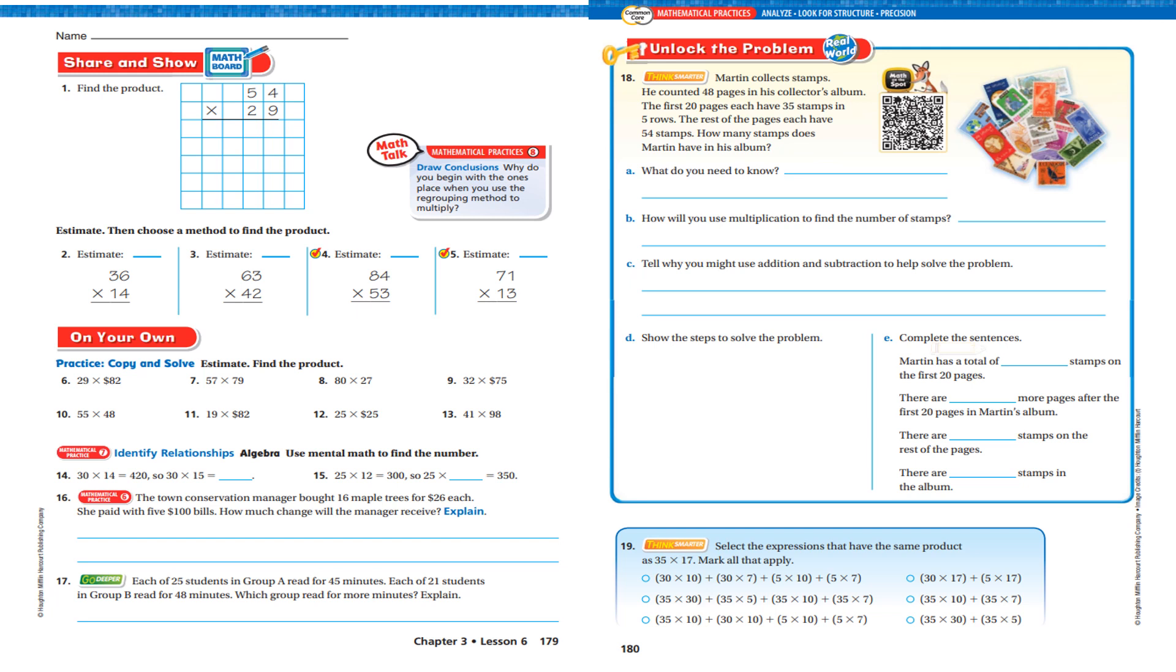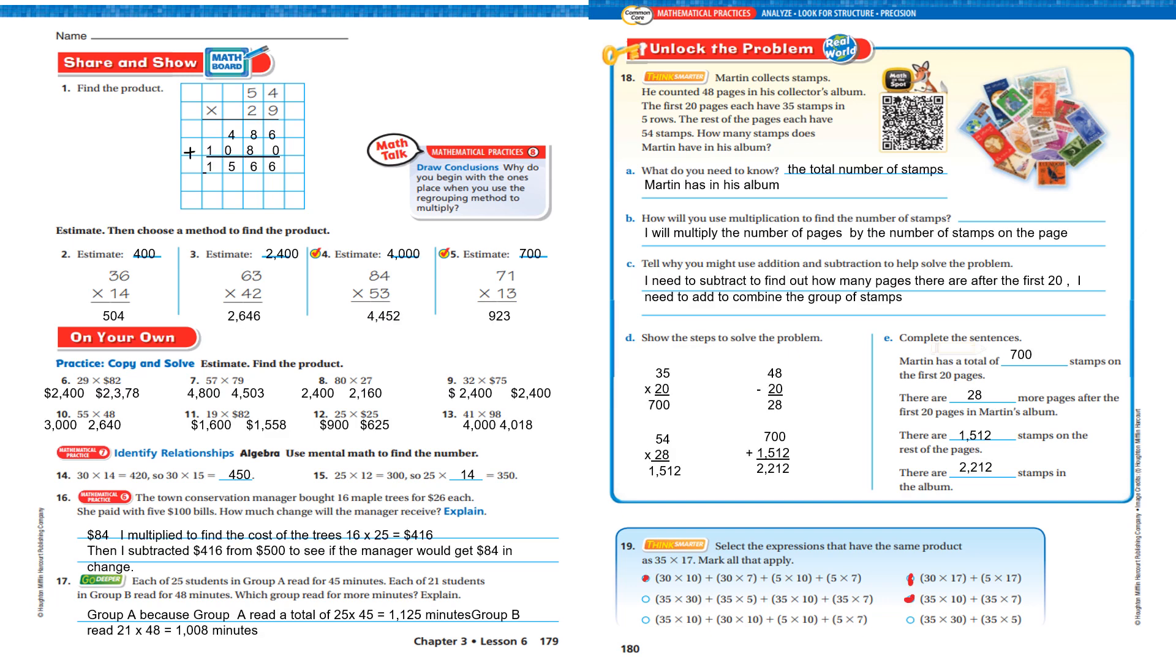Now I want you to do page 179 and 180 on your own and then come back and we will check it. Okay, boys and girls, here are the answers to questions from pages 179 and 180. If you are in my class and you missed from 1 to 13, I want you to redo them. And if you still are getting the answers wrong, you need to contact me so that I can give you individual help.